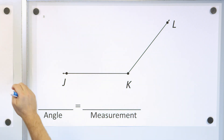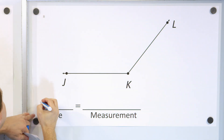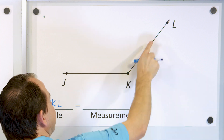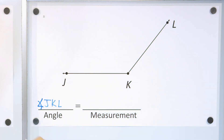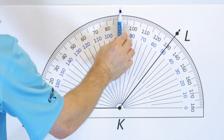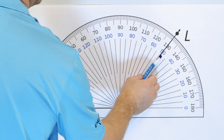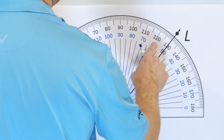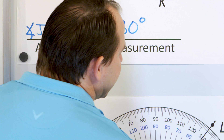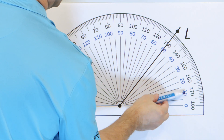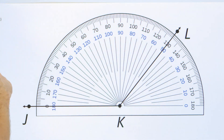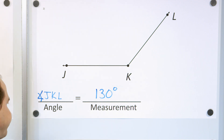Here we have an angle with J, K at the vertex, and L. So we're going to name this angle JKL — we have to make sure K is in the center because it's at the vertex. Now we have to measure this. We're measuring how open the angle is from this ray; straight up would be 90, but this has to be bigger than 90 because it's more open than that. Our choices are 50 or 130. The angle measure has to be bigger than 90, so it's 130 degrees. You can ignore the 50 — the 50 would be if you were measuring down to that spot, but we're measuring the big angle, so it's 130 degrees.